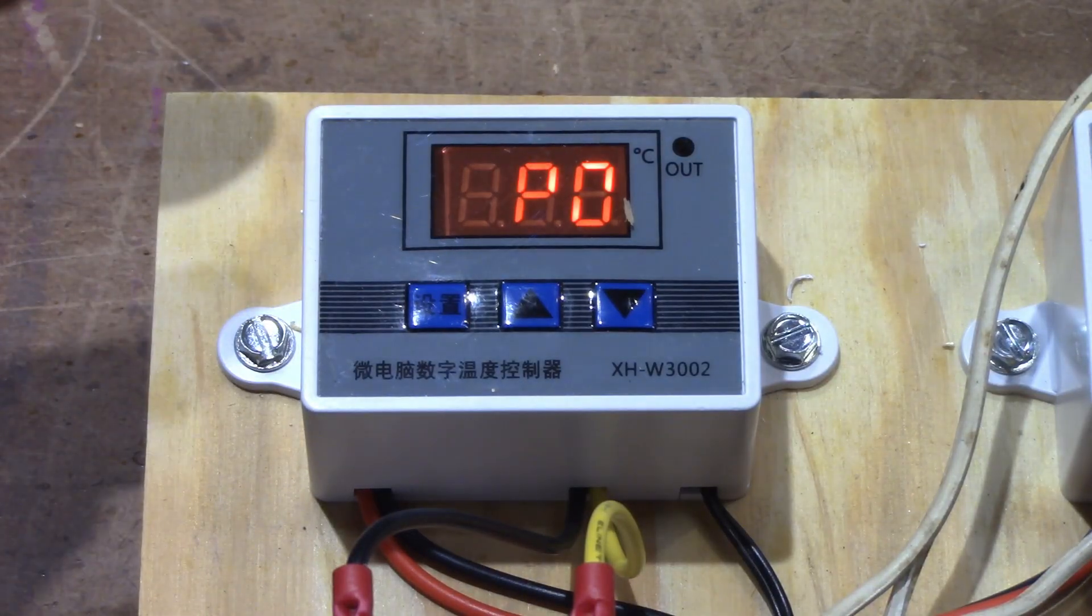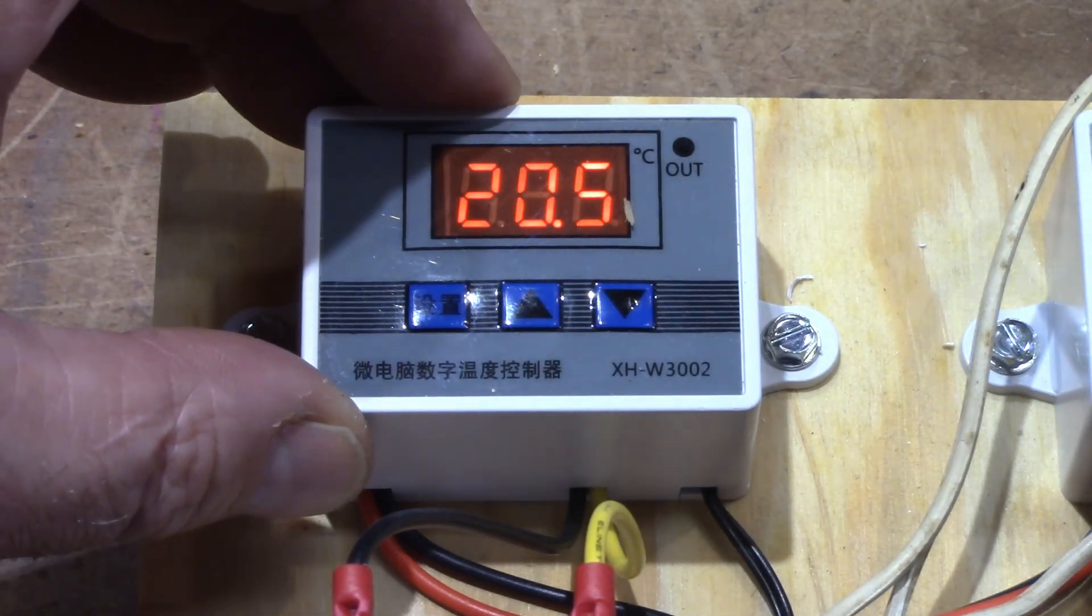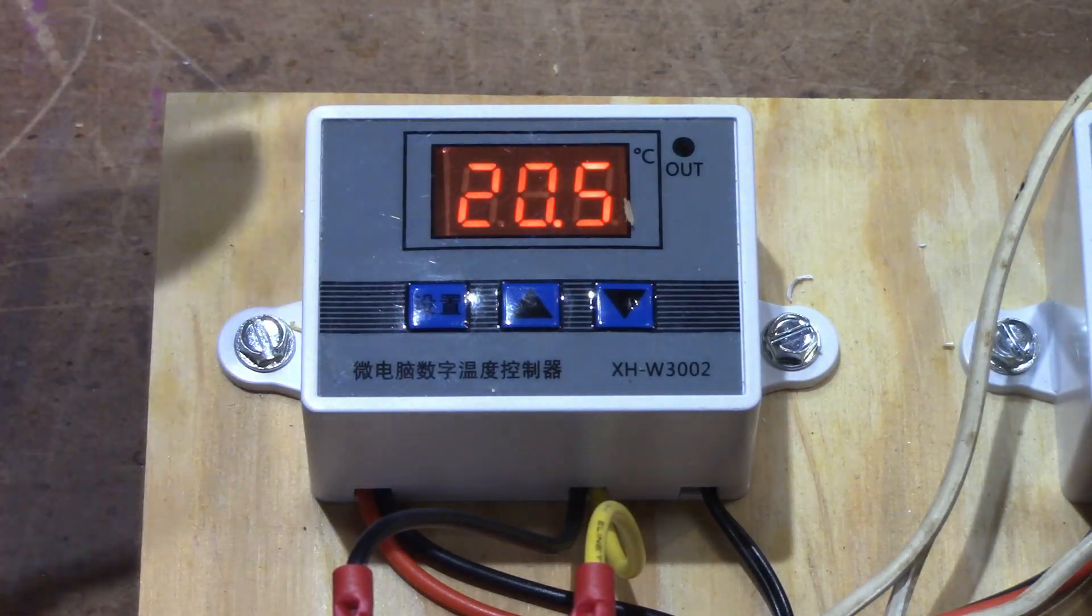Now PO is the temperature that you want this to turn on at. These are for heating only, they don't do cooling and heating, just heating. So it's the temperature that you want it to come on.